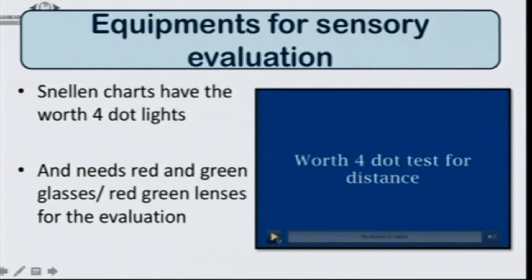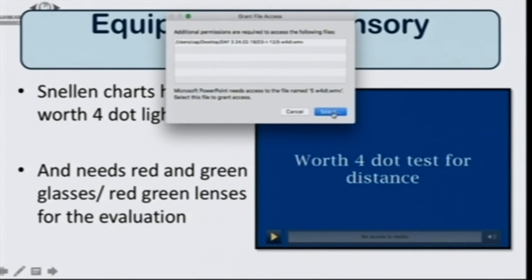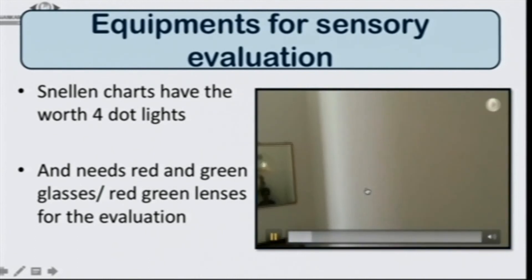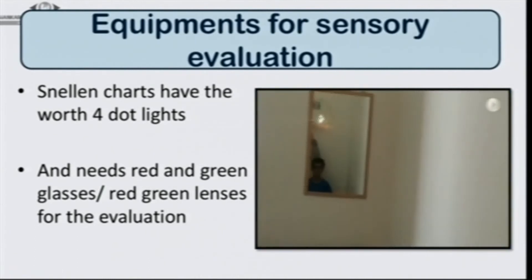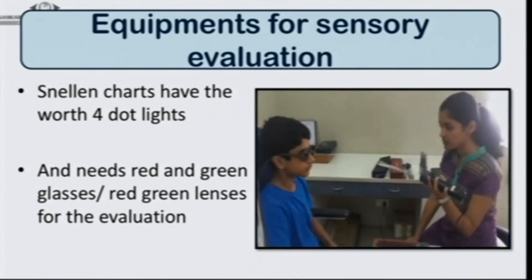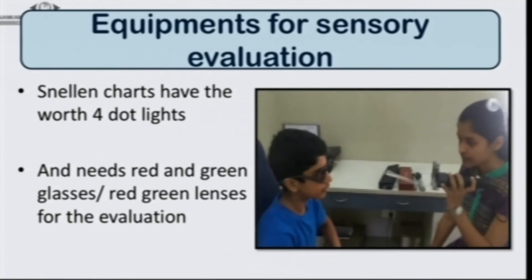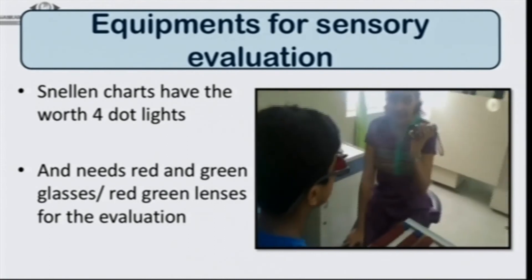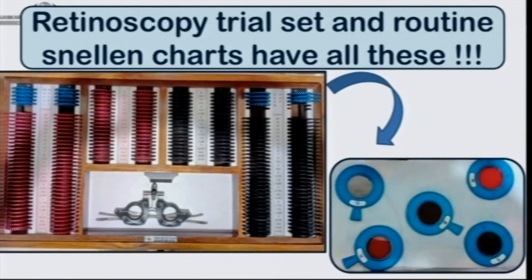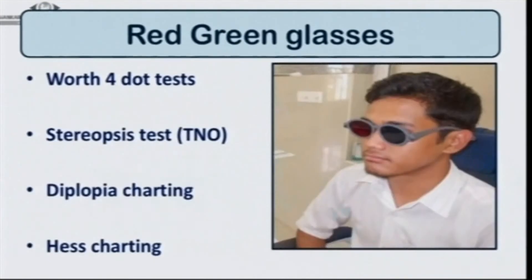Once we measure the squint, we need sensory evaluation as well. The Worth 4.0 test is the most commonly done sensory evaluation test in the squint clinic. Do we need extra equipment? No — it is already incorporated in the Snellen visual acuity chart. We just need a pair of red and green glasses. If we don't have those, the retinoscopic trial set itself has red and green lenses which can be placed in a trial frame.